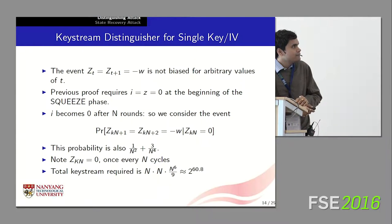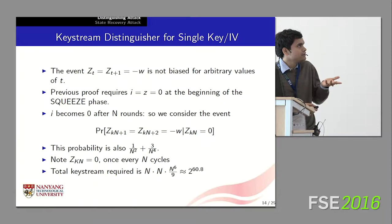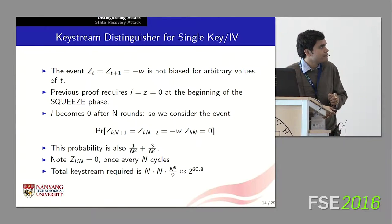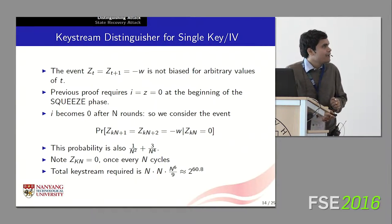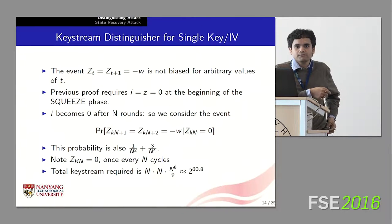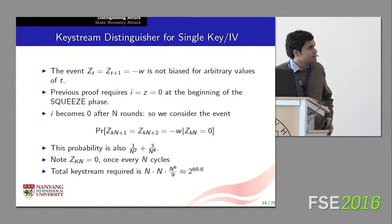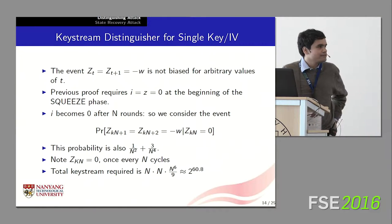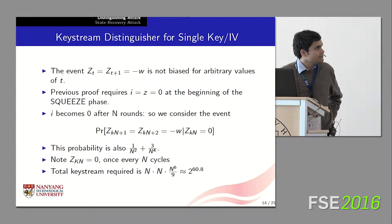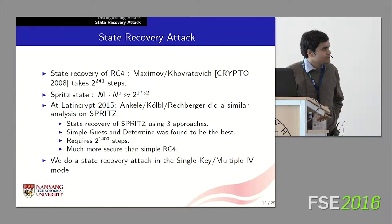We know that I becomes zero after every N iterations, so at the beginning of a new cycle of N iterations, I is always zero. We therefore look at the probability that the first two output bytes of a new cycle equal −W, given that the output byte just before it is zero — this satisfies all the initial conditions. This probability also turns out to be 1/N² + 3/N⁴. Since Z is also required to be zero, which occurs once every N cycles, distinguishing this keystream requires roughly N · N · N⁶/9 keystream bytes, which is around 2⁶¹.